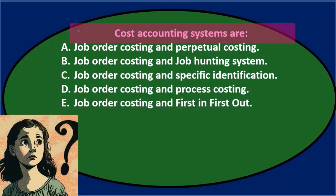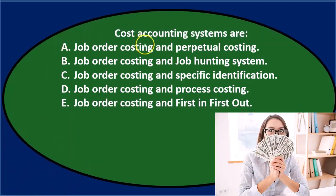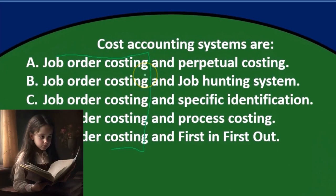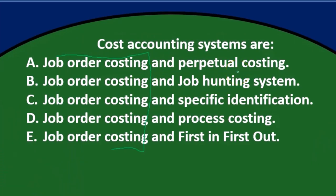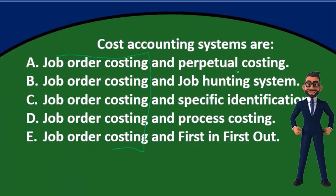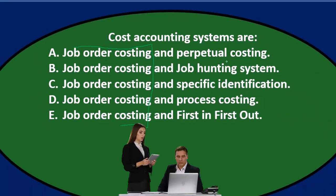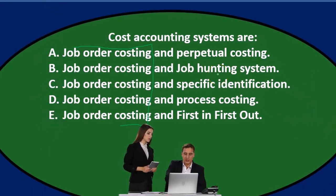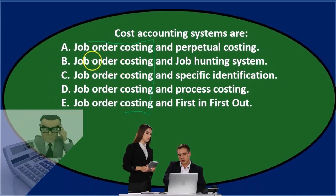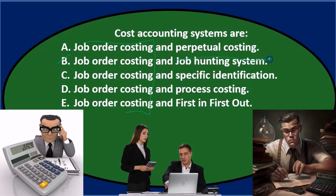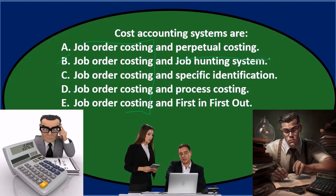Cost accounting systems — all of the options have job order costing, so that first half is pretty much a given. We're really just evaluating the second half. Option A says perpetual costing — we've probably heard of a perpetual system before, so I'll keep that for now. Option B says job hunting system, and that sounds silly — it sounds like something made up because they ran out of options, so probably not that one.